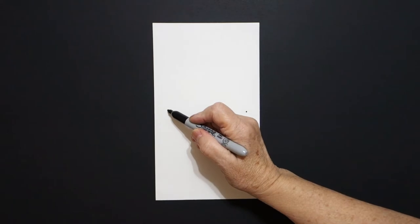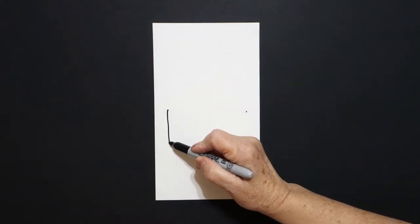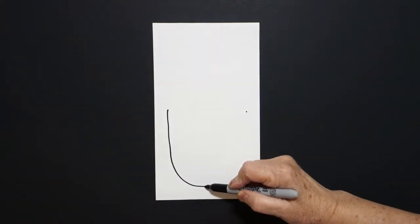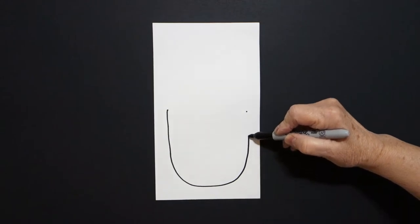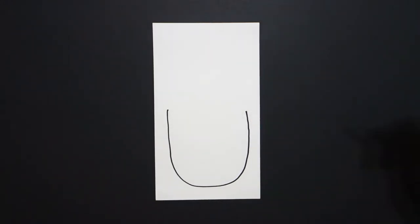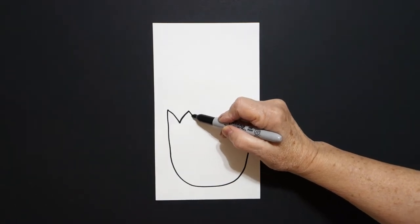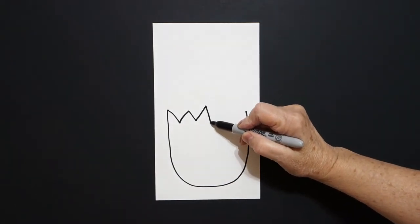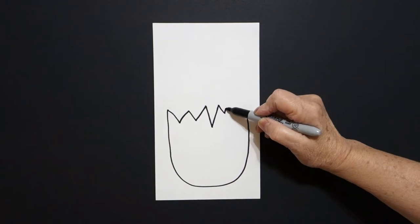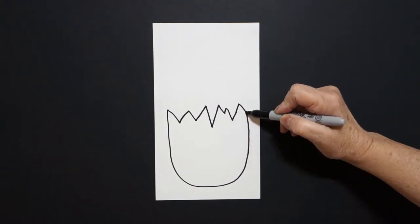Come back to the left dot and we're going to draw a big curve line down, up, and connect. Coming back to the left, I'm going to draw zigzag, zigzag, zigzag, zigzag, zigzag, zigzag, connect.